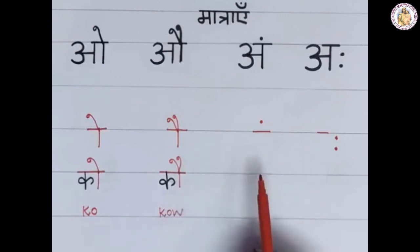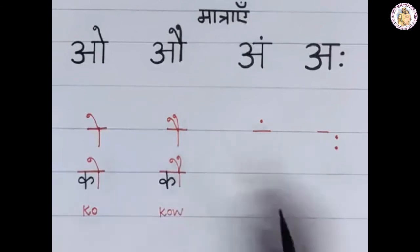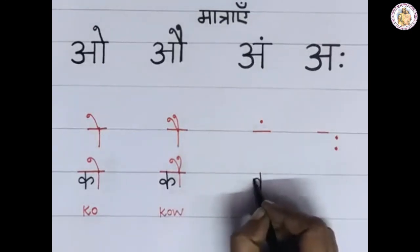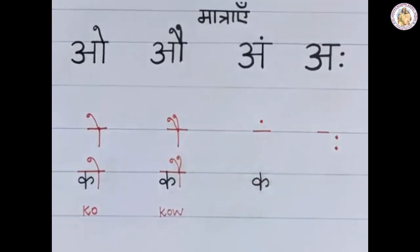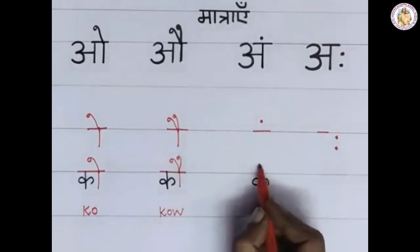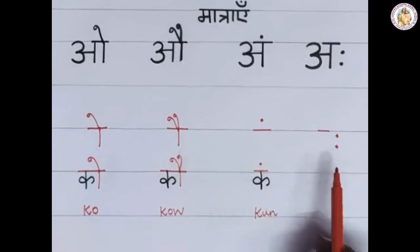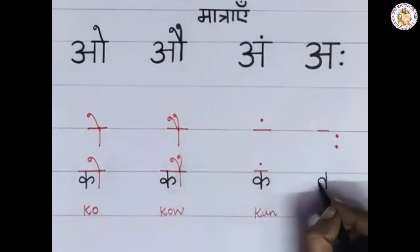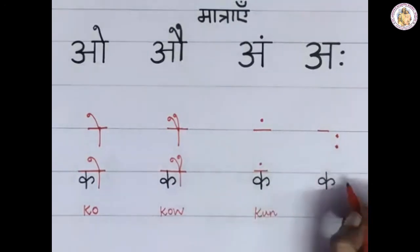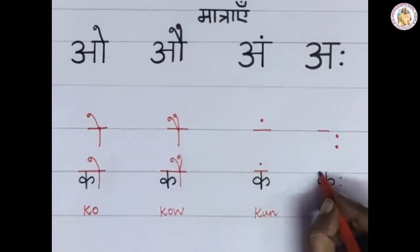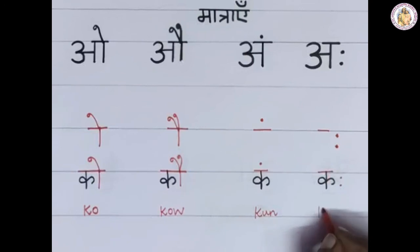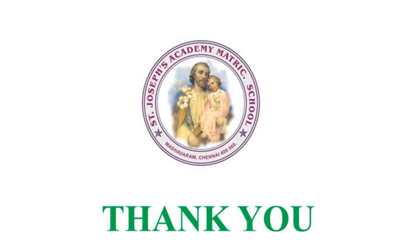Next one is the 'ang' Matra (anusvara). Write the vyanjan K. On the top, place a dot like this. This gives 'Kang'. Next one is the 'ah' Matra (visarga). First write the vyanjan K. To the right side of the vyanjan, place two dots like this. This gives 'Kah'.